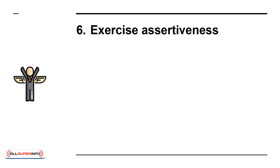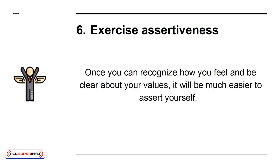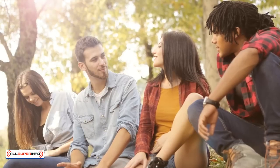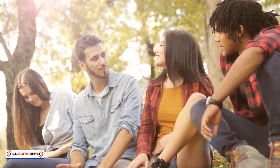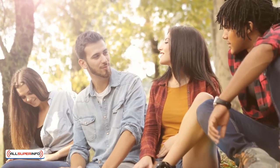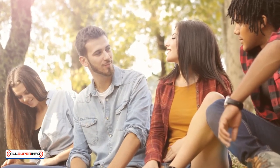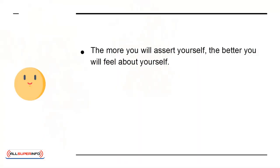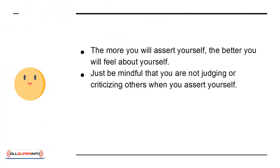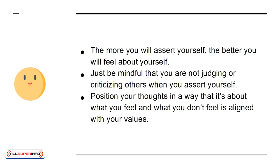6. Exercise assertiveness. Once you can recognize how you feel and be clear about your values, it will be much easier to assert yourself. For example, if you are with a group of friends and one suggests something you are uncomfortable about, you can assert yourself. Express how you feel and why you don't feel like participating in that idea. The more you assert yourself, the better you will feel about yourself. Just be mindful that you are not judging or criticizing others when you assert yourself — position your thoughts in a way that it is about what you feel and what you don't feel is aligned with your values.